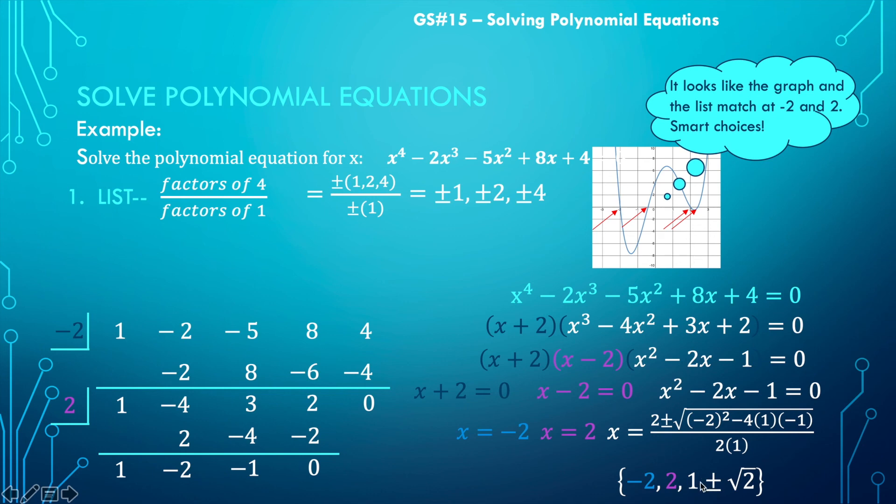So this is the complete solution set. This is the process for solving polynomial equations that we can't factor, finding the zeros of a polynomial function, or finding the roots of a function — all of these mean the same thing and use the same process. That wraps up polynomial equations — I'll see you next time.